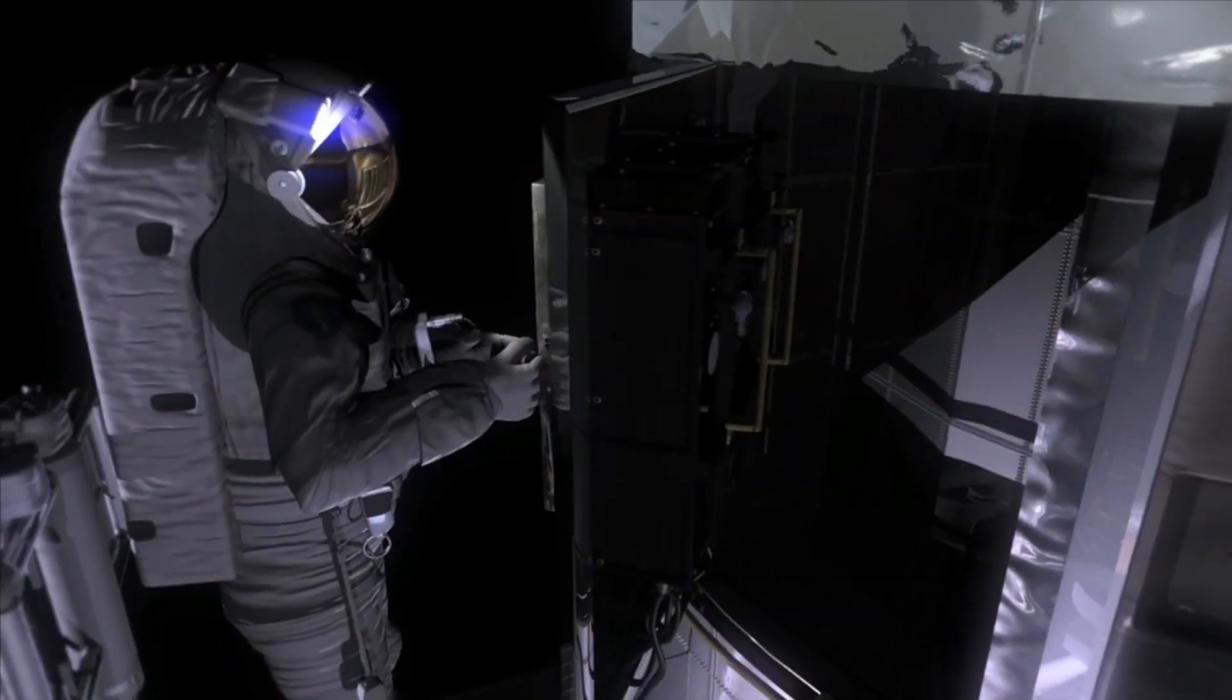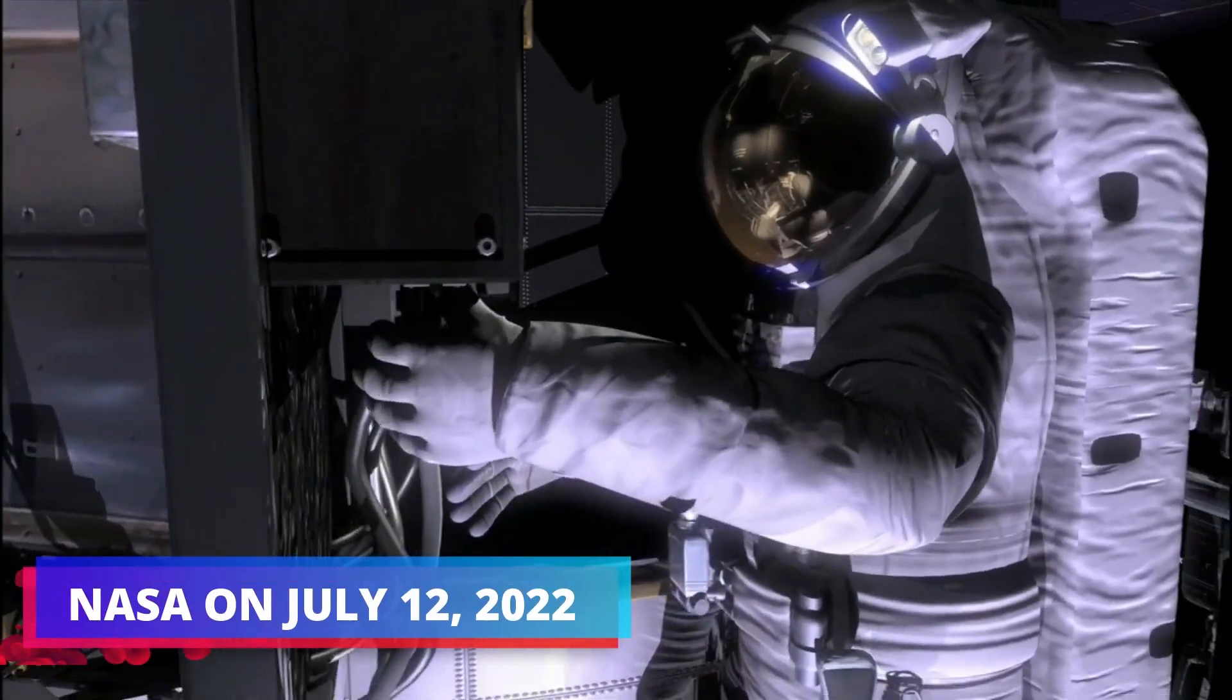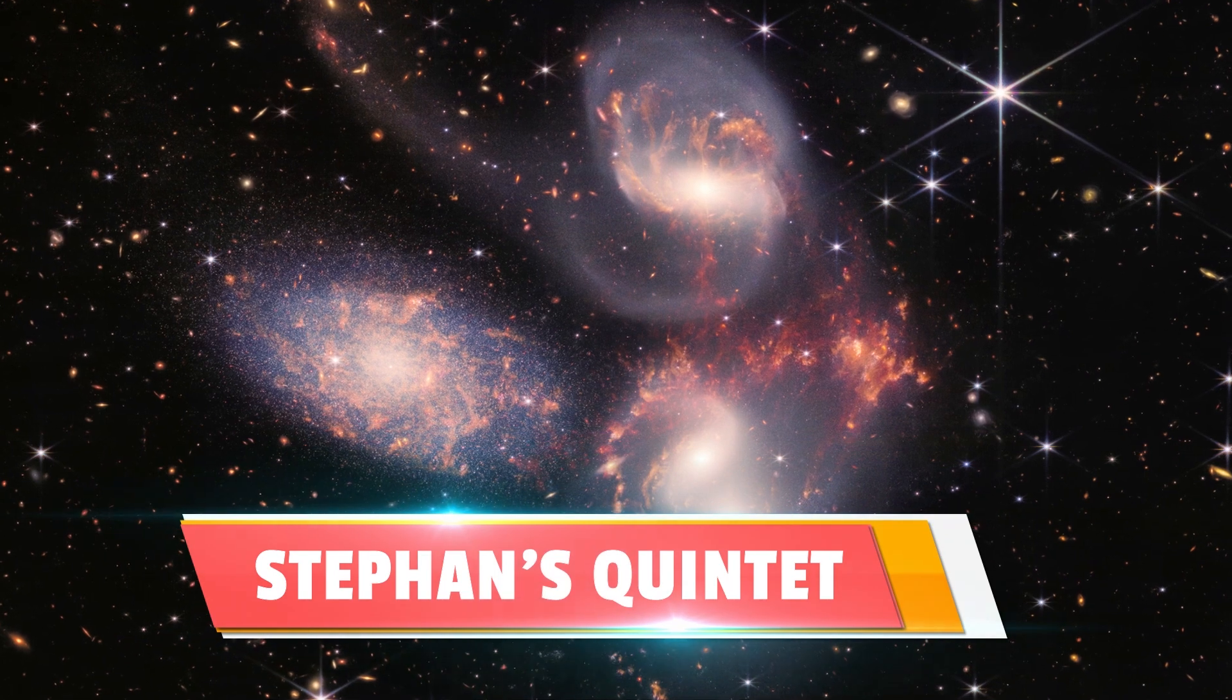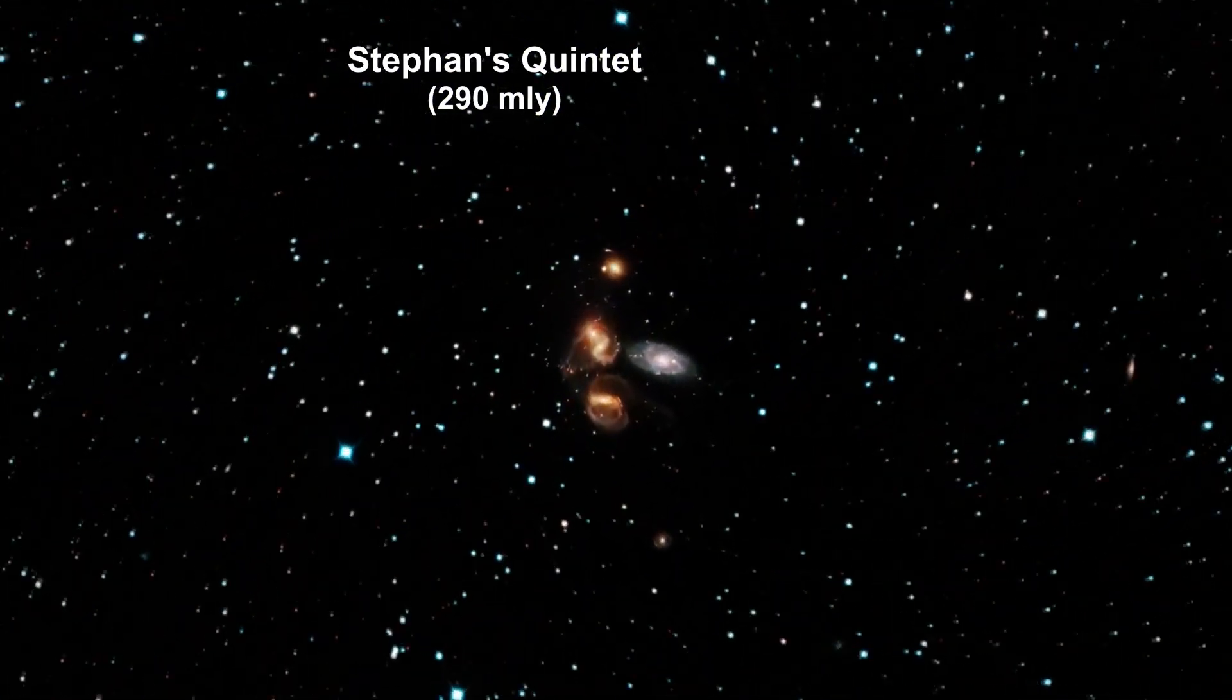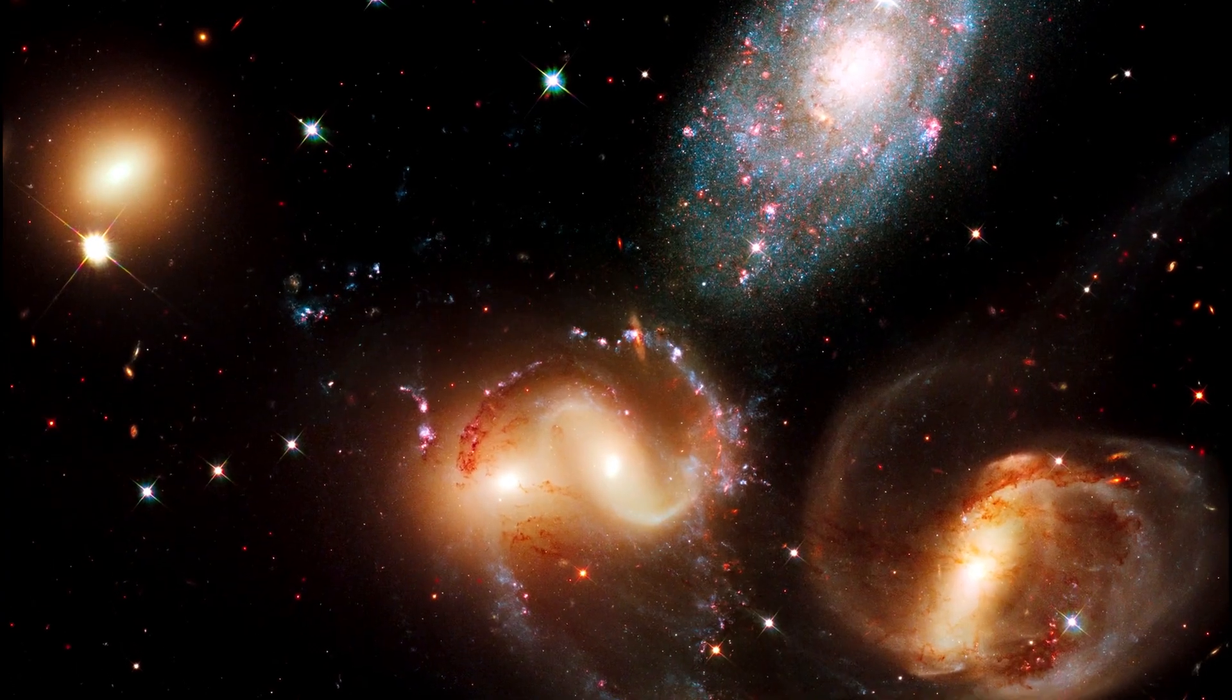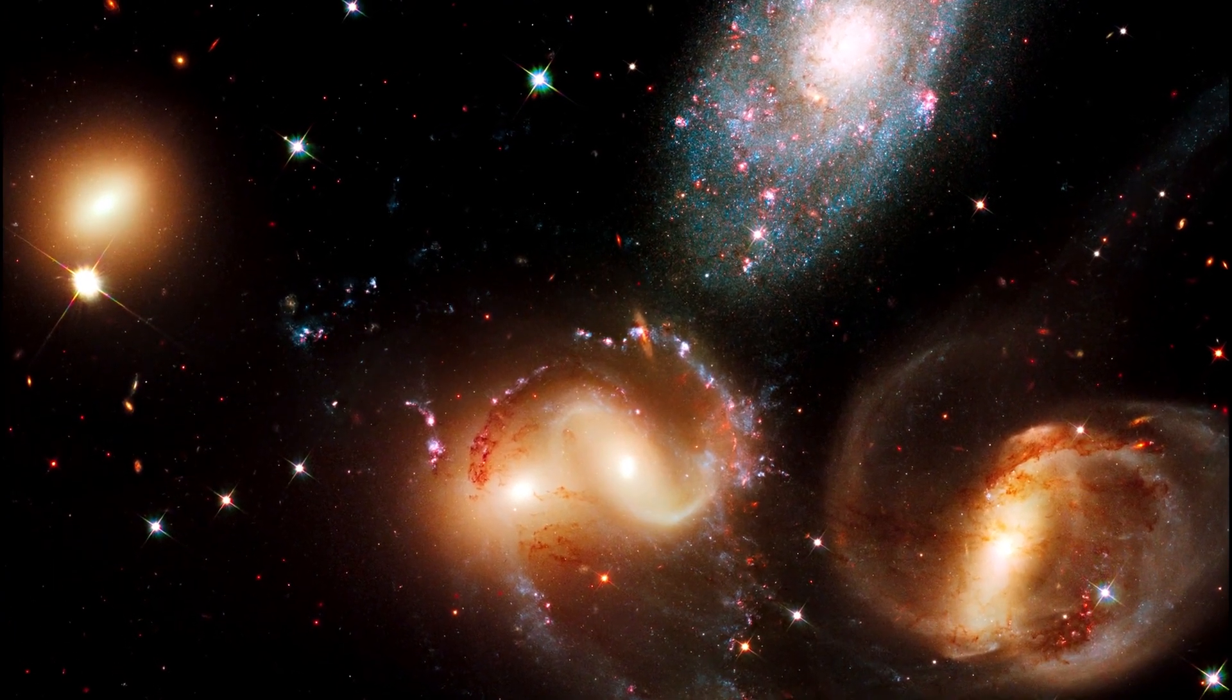Closing out the list of Webb's first images released by NASA on July 12, 2022, we have the enormous mosaic of the Stephens Quintet. This is a super-large image of five galaxies. According to scientists, the mosaic is equivalent to one-fifth of the moon's diameter.